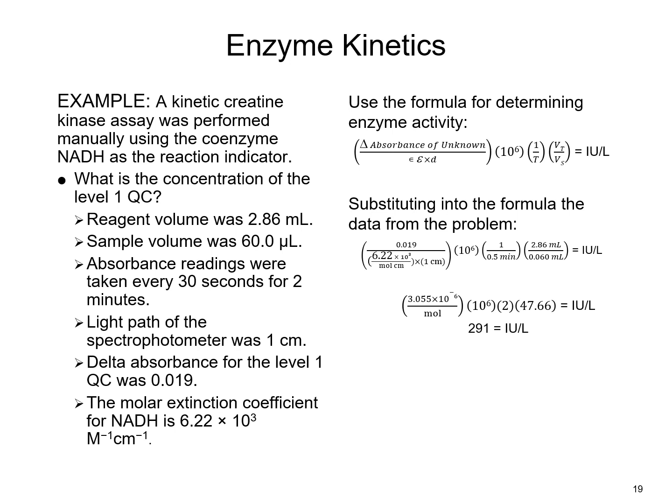An example is a kinetic creatine kinase assay manually performed using the coenzyme NADH as the reaction indicator. In this example, you would have your volumes of reagents and absorbance readings, plug the known values into the equation, and ultimately obtain a result for that quality control reaction.